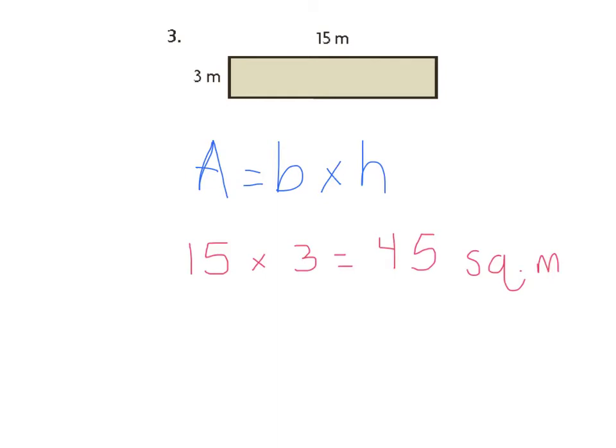Okay, so did you do 15 times 3 equals 45 squared meters? If you did, you got it right. Now don't forget to tell me square meters, because we want to know what unit of measurement we're talking about.